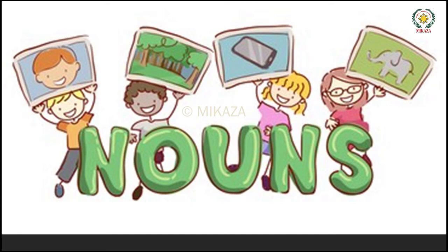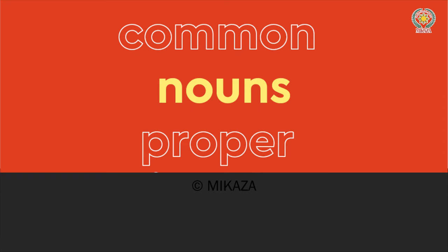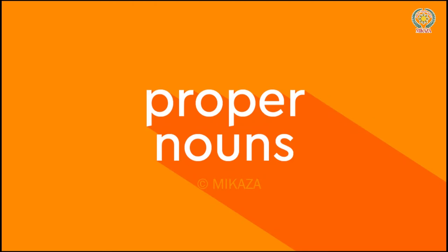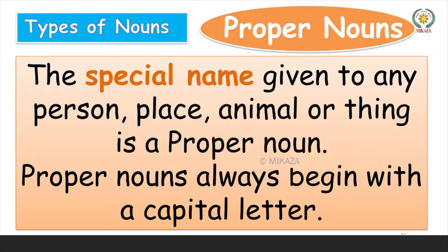In our lesson today, I'm going to revise because we have done this during our physical classes. There are two types of noun we will talk about: proper noun and common noun. Now, what is a proper noun? Proper nouns are the special name given to any person, place, animal, or thing. Note: proper noun always begins with a capital letter.